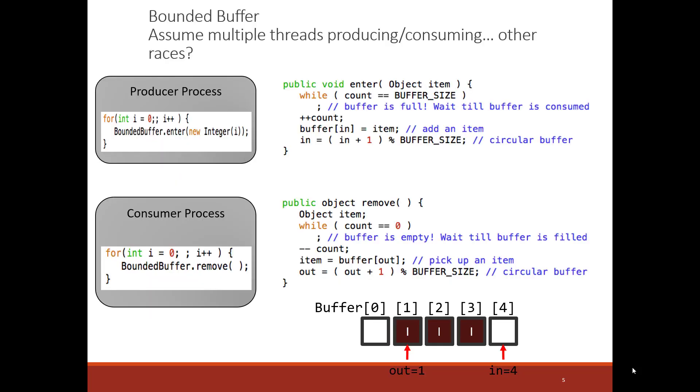Let's take a look at another example of a race condition using the exact same code. Let's assume now, that instead of one thread doing the entering and one thread doing the removing, we have many threads producing and many threads consuming. So, many threads can be in the enter call, and many threads can be in the remove call. Can you see some other race conditions? Go ahead and pause the video and take a look.